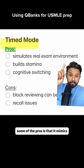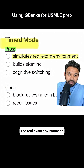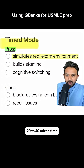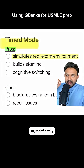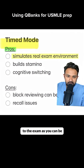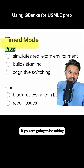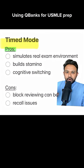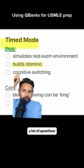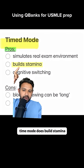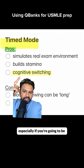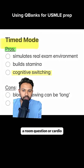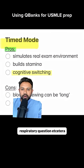What about timed mode? Some pros: it mimics the real exam environment. On exam day at the Prometric Center, you're going to get 20 to 40 mixed timed test-mode blocks, so it is as true to the exam as you can get. This is especially true if you take your timed blocks in a structured setting like the library or set up your desk like the Prometric Center. Because you're doing a lot of questions in a row, timed mode builds stamina and improves cognitive switching — especially in mixed mode where one question is cardio, then you switch to a renal question, then back to respiratory.